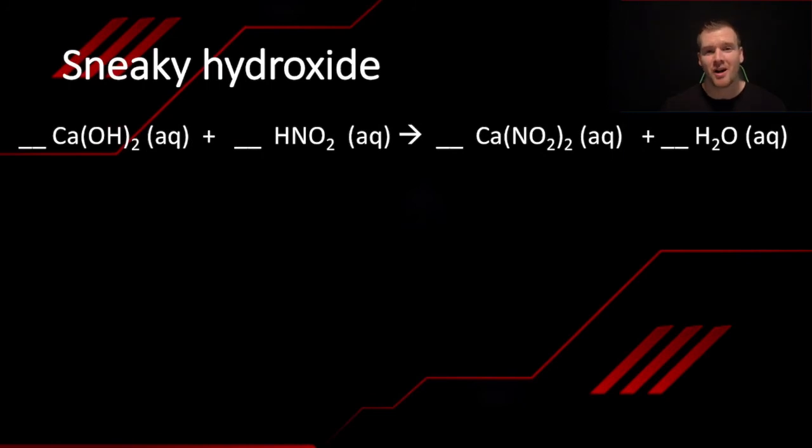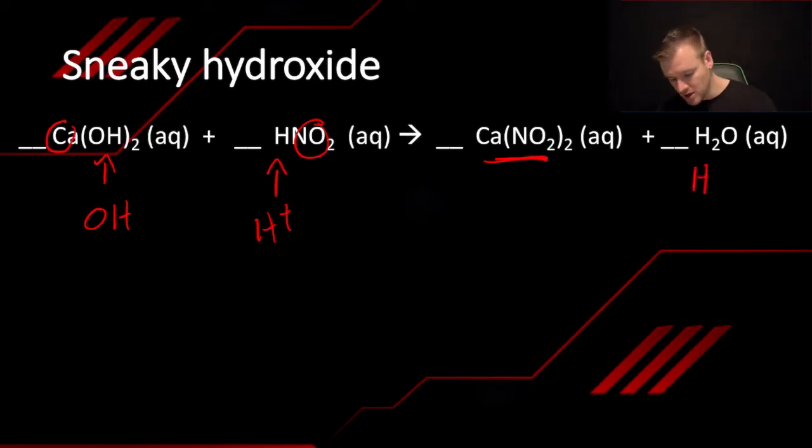So the one polyatomic that can be hard to track is the sneaky hydroxide. And this is because when it bonds to hydrogen, we don't write it as hydrogen with an hydroxide. We write it as water. So you can kind of see here, we have CA is going to bond with NO2 to make CA(NO2)2. What we have left over is OH- and H+. When those come together, instead of writing HOH, we just write it as H2O because there's two hydrogens and one oxygen. That often gives people trouble how to track where the hydroxides and the hydrogens went. So I actually like to write it like that and then it makes it a little bit easier to balance.